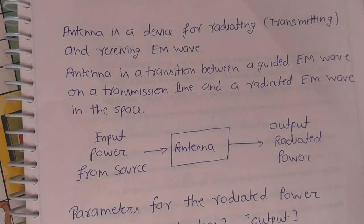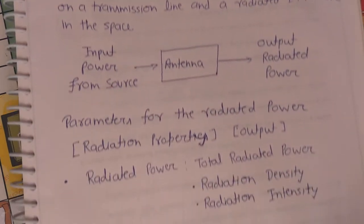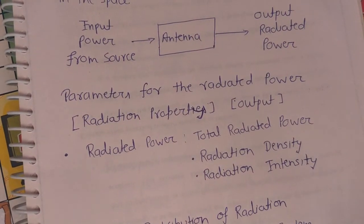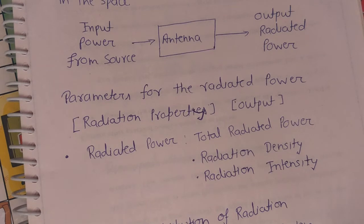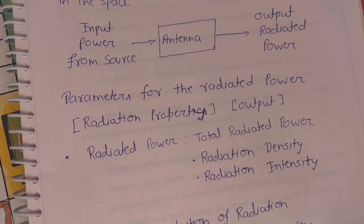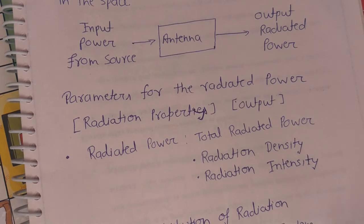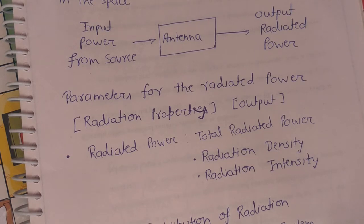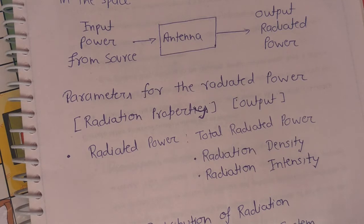The parameters of the radiated power are the output parameters which come under the category of radiation properties. There are three parameters: number one is total radiated power of the antenna, number two is radiation density, and number three is radiation intensity. We will discuss these parameters in detail in upcoming lectures.